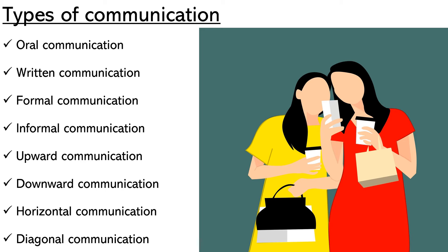Next one is formal communication. In an organization you will get memos, meeting agendas, meeting schedules — that is formal communication. You will receive a proper mail if you access certain sites during your work hours. Whenever the communication is within an organization structure, it is totally a formal one.